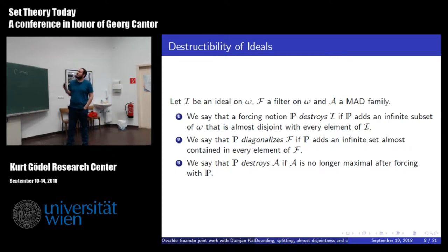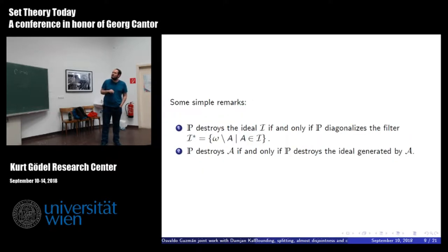Well, so now on the destructibility of ideals. Take I, an ideal in omega, F, a filter, and A, a MAD family. So we say that P destroys I, an ideal I, if P adds an infinite subset of omega that is almost disjoint with every element of I. P diagonalizes the filter F if P adds an infinite set almost containing every element of F. And so in fact, diagonalizing a filter is the same as destroying the dual ideal. So one and two are really the same, just one with filters, one with ideals. And we say P destroys a MAD family A if A is no longer maximal after forcing with P. And in fact, three is a particular case of one. Yeah, so P destroys A if and only if P destroys the ideal generated by A.